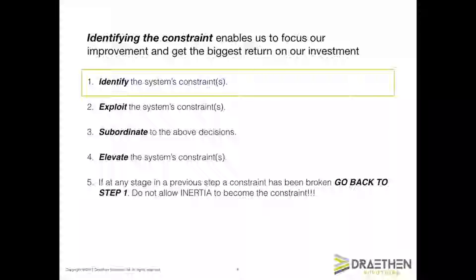Step 1 of the 5 focusing steps — identify the system's constraint — requires us to focus our attention on the one area of our whole operation that is currently determining the performance of the system. Any manufacturing operation has thousands of things that can be improved. For example, we could invest in decorating the reception area, giving it a nice coat of fresh paint, a new comfortable sofa, soft lighting, a display of our products, and customers who visit our plant would really like it. It would provide a great introduction to our business.